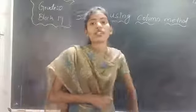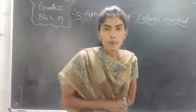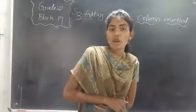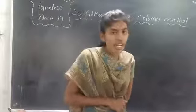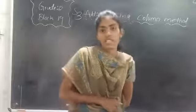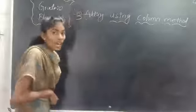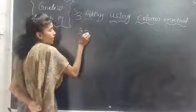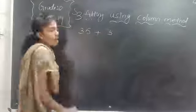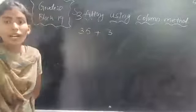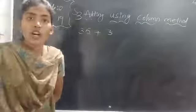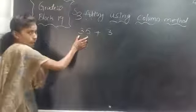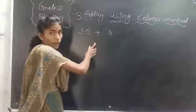Which method are we going to use children? Column method. This is a very easy method, yes? You know how to add numbers by using column method. So let's take some examples. I have 35 plus 3. I want to add 35 and 3 by using column method. Here I am adding a 2-digit number with a 1-digit number.